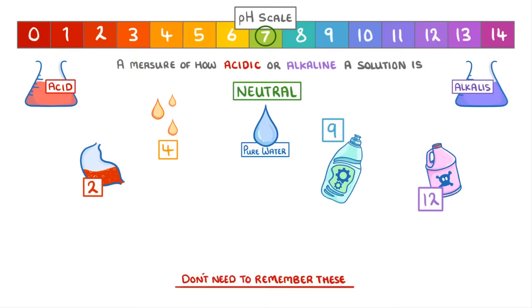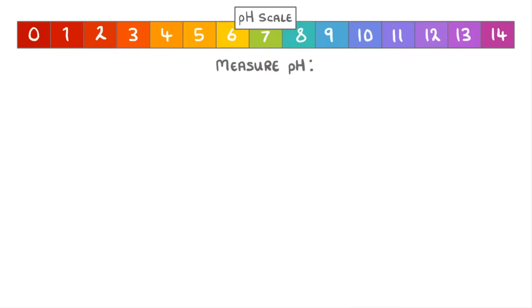Now we can measure pH in a couple of different ways. One is to use some kind of indicator, which are a group of chemical dyes that change colour depending on the pH. And different indicators will change colour at different pHs.